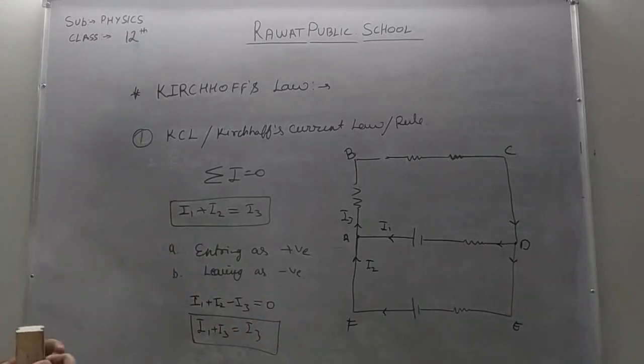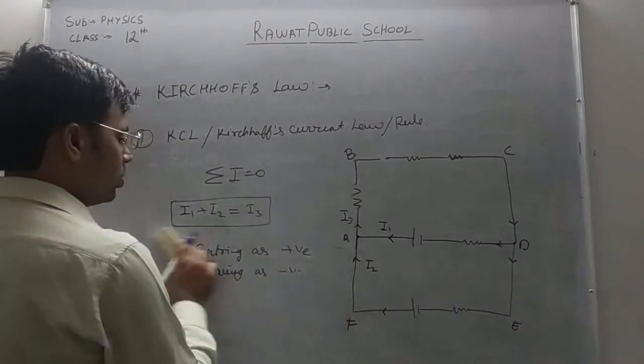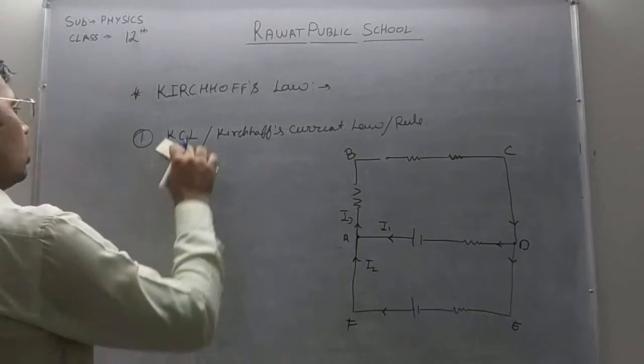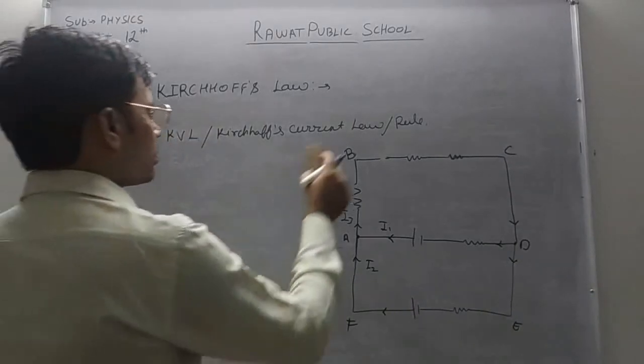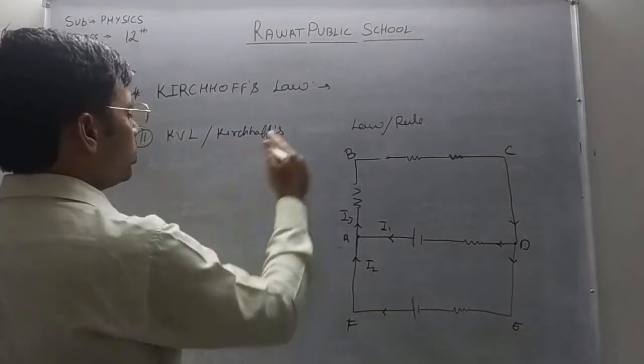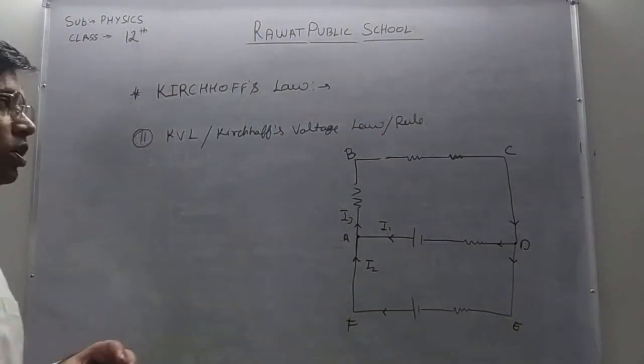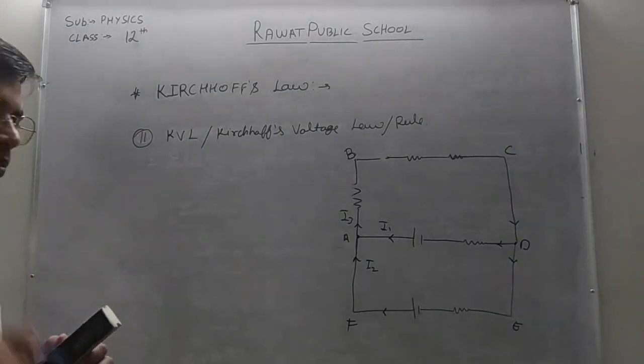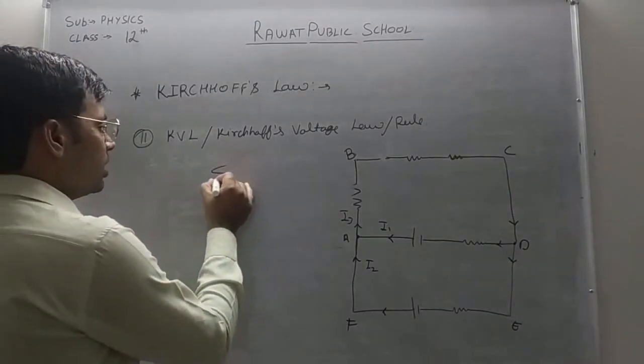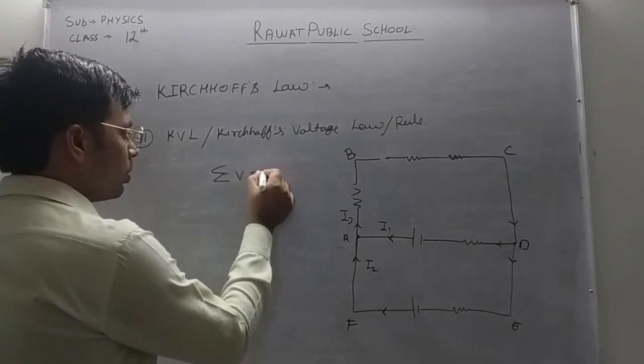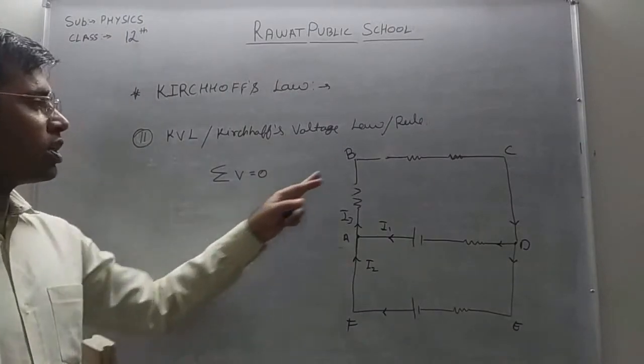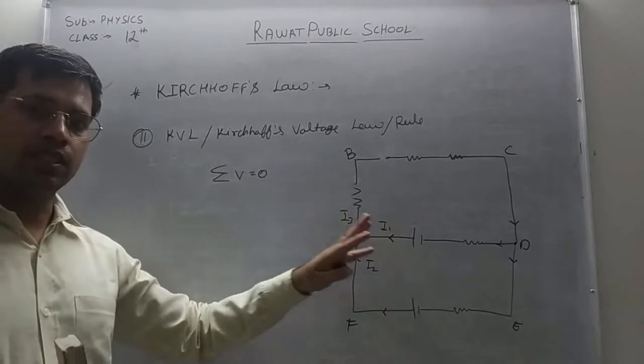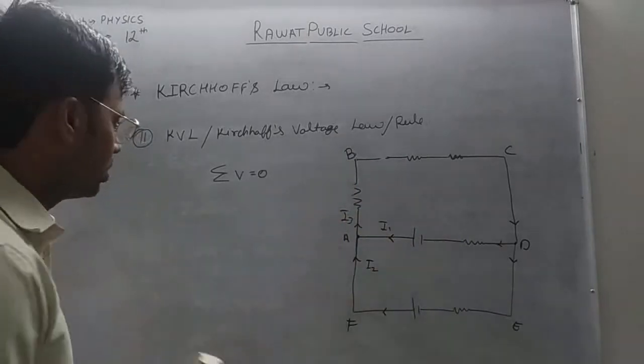So this is Kirchhoff's current rule. Now, let us discuss the second rule. Kirchhoff's voltage law. And we simply call it KVL. Kirchhoff's voltage law. And Kirchhoff's voltage rule. Now, as per this rule mathematically we can say the total sum of potential drop in a mesh is zero. Ya rule kia bolta hai total potential drop in a loop or in a mesh is zero. Sum of all the potentials.